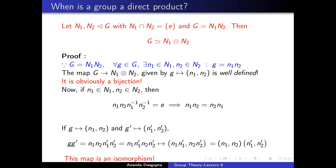The semi-direct product is a slightly more complicated notion, so it's best that we look at an example before we dive into the theory. The example I've chosen is a very important one in physics — in fact, one look at it should tell you why the semi-direct product is so important for group-theoretical applications in physics.